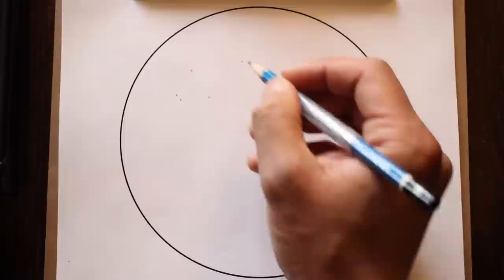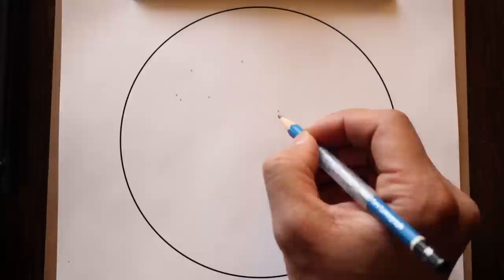You can draw the bright stars using a medium dark pencil. Don't press too hard so that you can erase any mistakes later on.